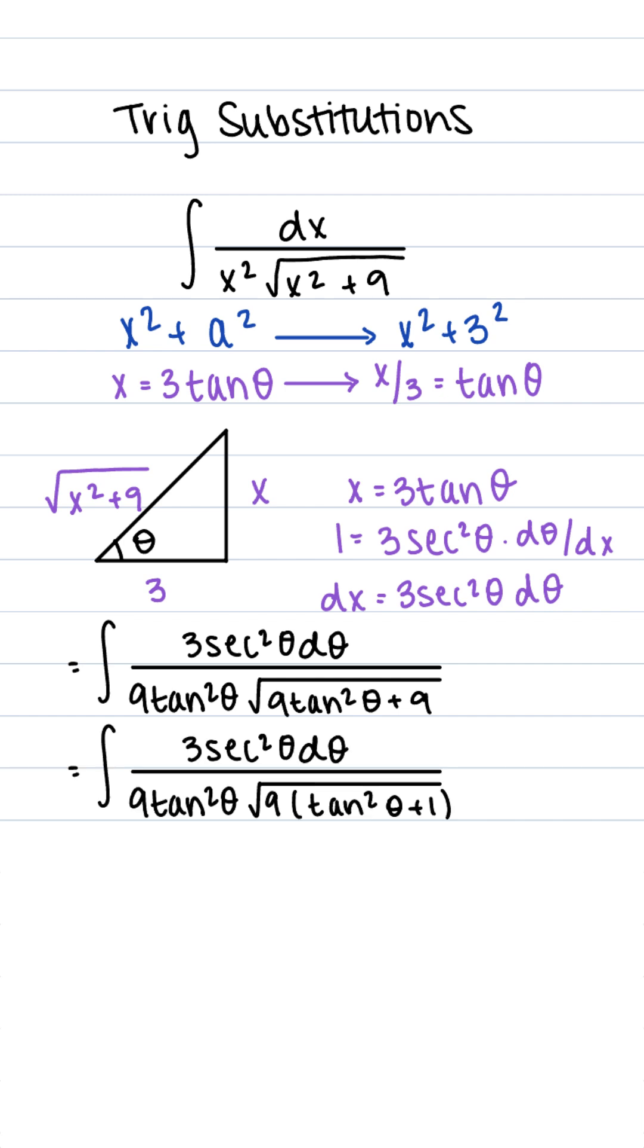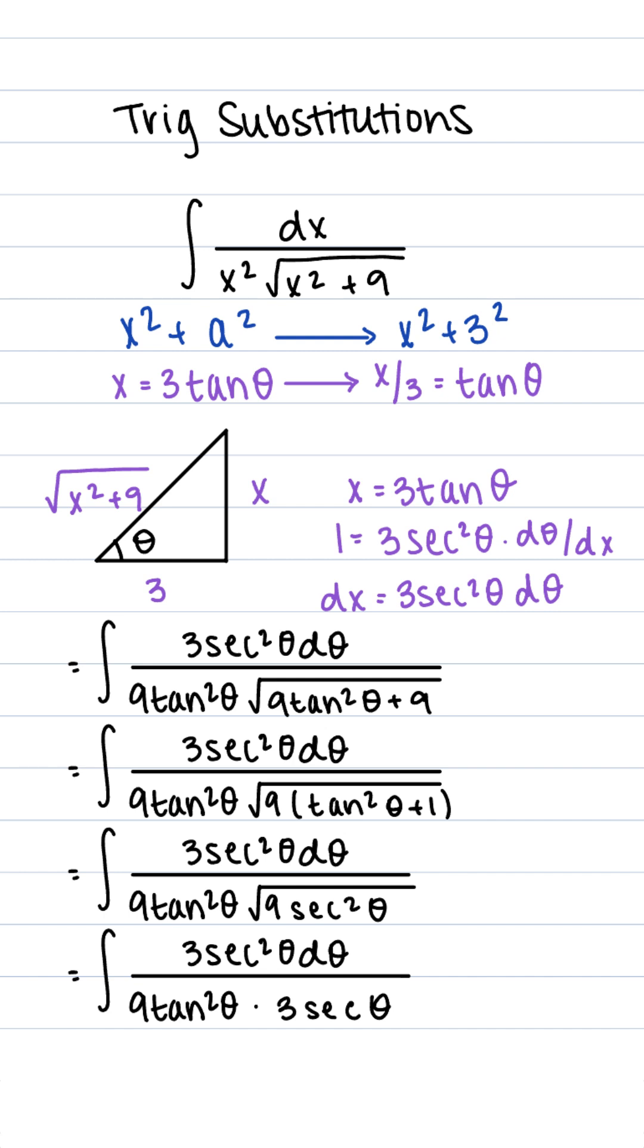So here inside the square root, we can factor out 9, and we have tangent squared theta plus 1 is equal to secant squared theta. Taking the square root, that's equal to 3 secant of theta.